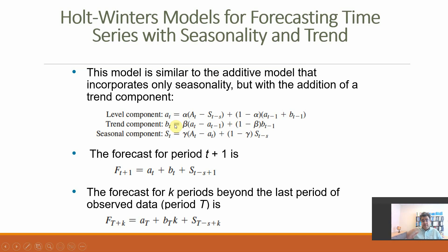The trend component, beta times A T, so we need A T before B T, minus A T minus 1, plus 1 minus beta times B T minus 1. And the seasonal component is epsilon times actual number minus level plus 1 minus epsilon times the seasonal component of the previous year.